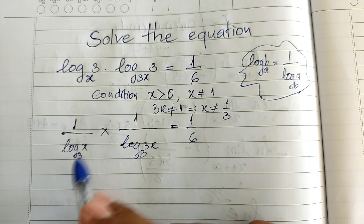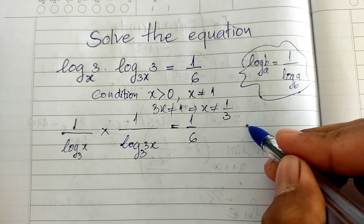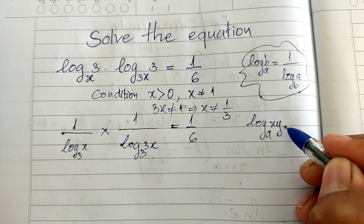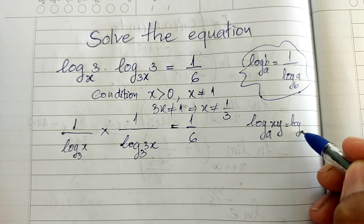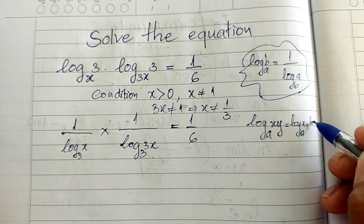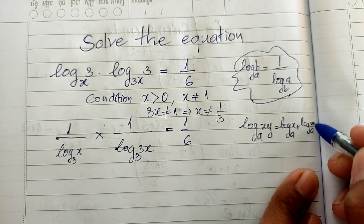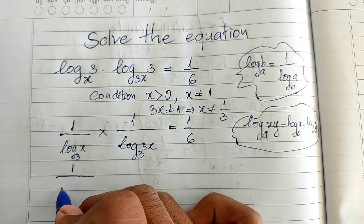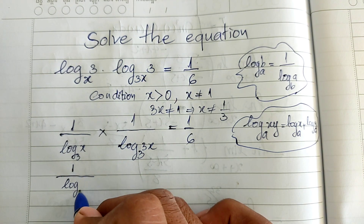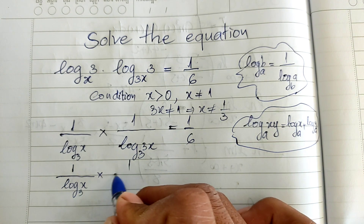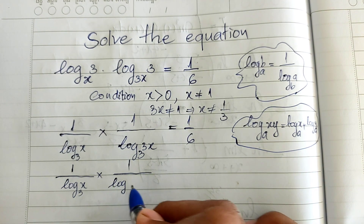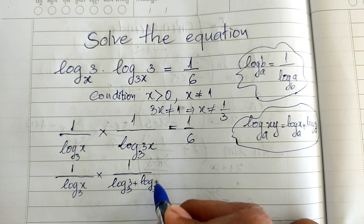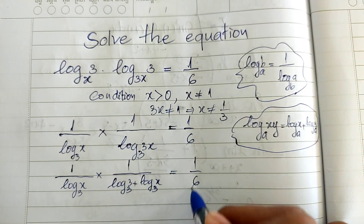Now I also use the rule that log base A of x times y is equal to log base A of x plus log base A of y. Applying this rule, I get 1 divided by log base 3 of h, multiplied by 1 divided by the quantity log base 3 of 3 plus log base 3 of h, equal to 1 divided by 6.